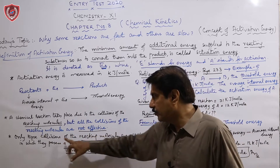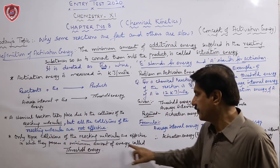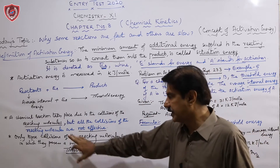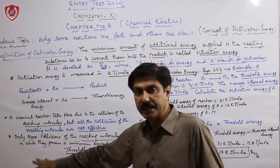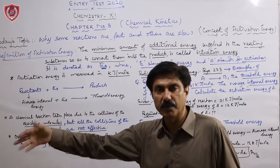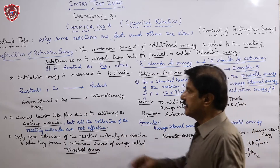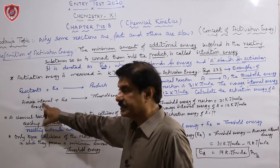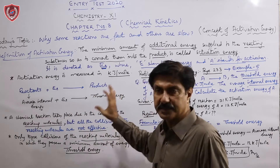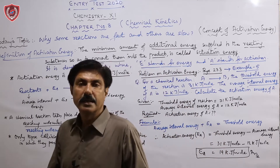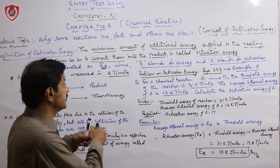Remember: only those collisions of the reacting molecules are effective in which they possess a minimum amount of energy called threshold energy. When the reaction's energy reaches threshold level, the reactants' collisions become so effective that they start forming products. Activation energy and average internal energy together reach the threshold energy level, and your reaction is completed. This topic has appeared 2-3 times in MCAT exams regarding calculation of activation energy.